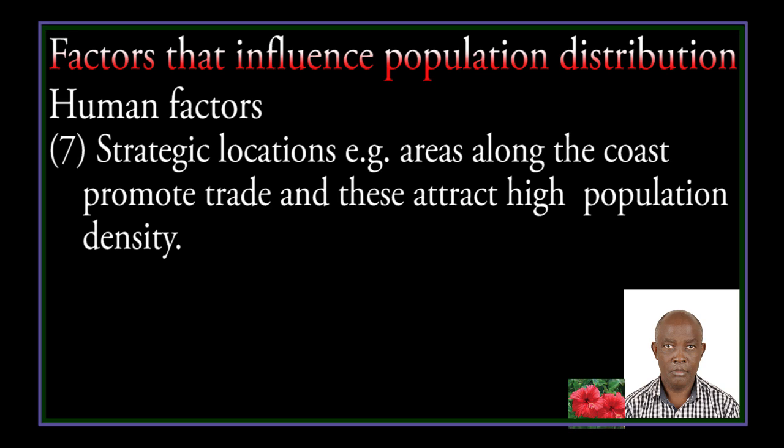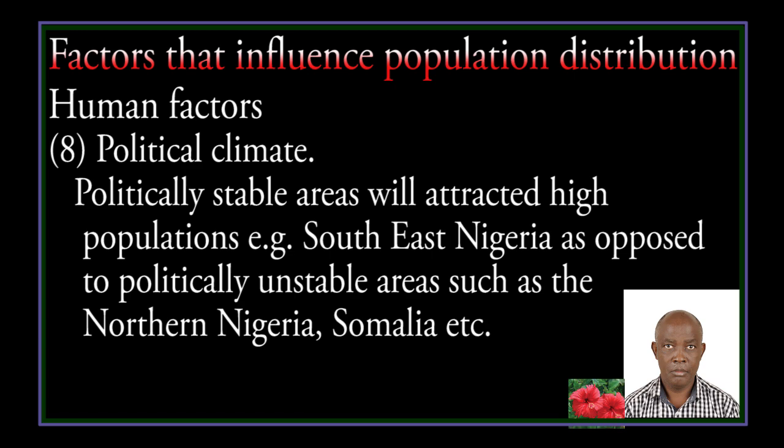Strategic location: areas along the coast promote trade and these attract high population density. Political climate: politically stable areas will attract high population — for example, South-East Nigeria, as opposed to politically unstable areas such as Northern Nigeria and Somalia.